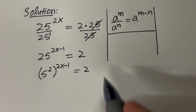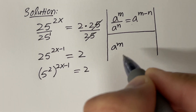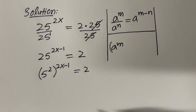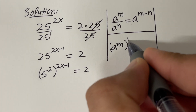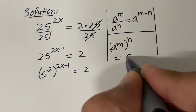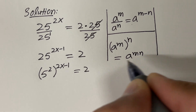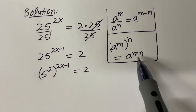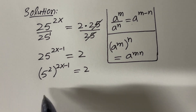Now I want to use this property: a raised to the power m raised to the power n is equal to a raised to the power m times n. So you are just multiplying the exponents.